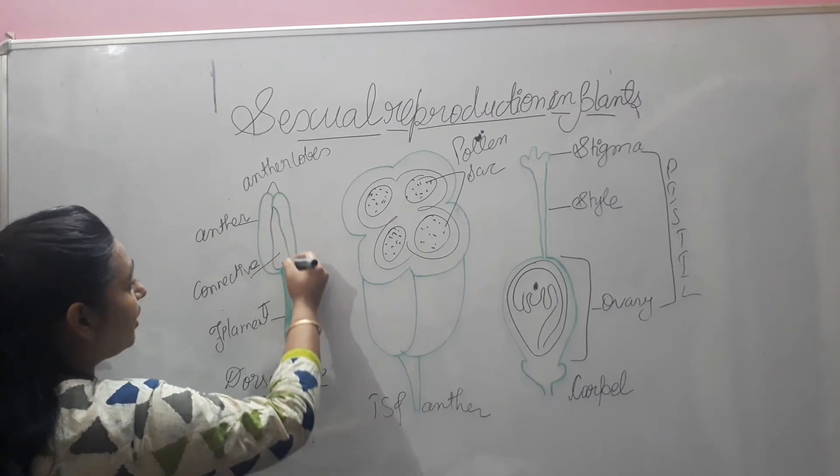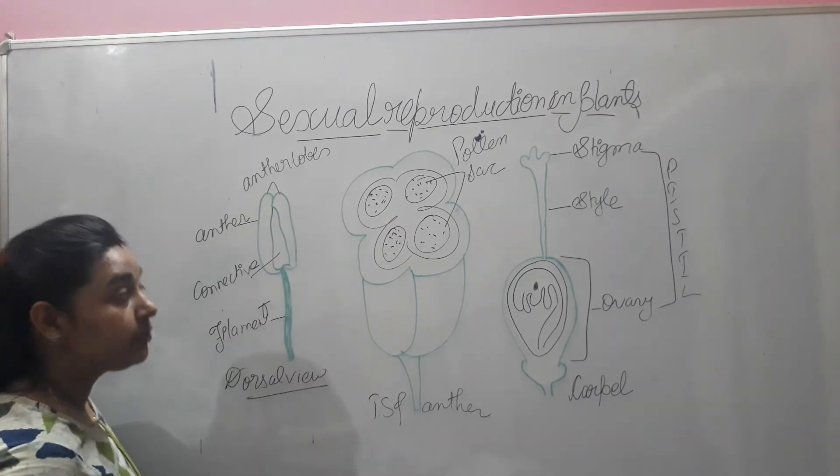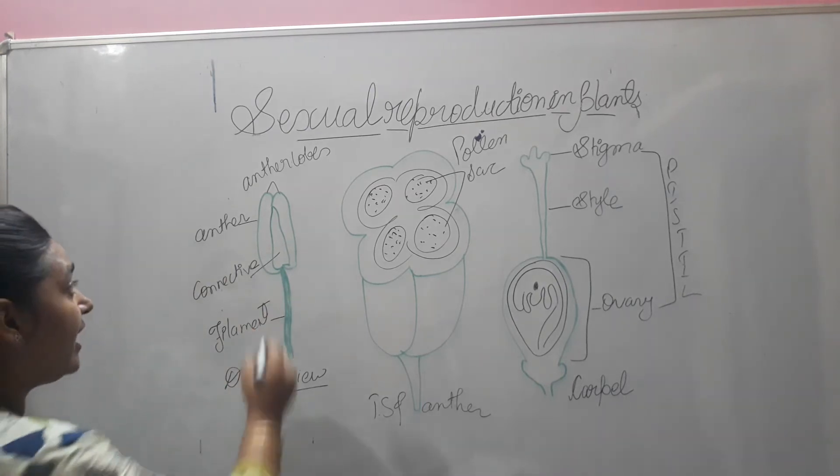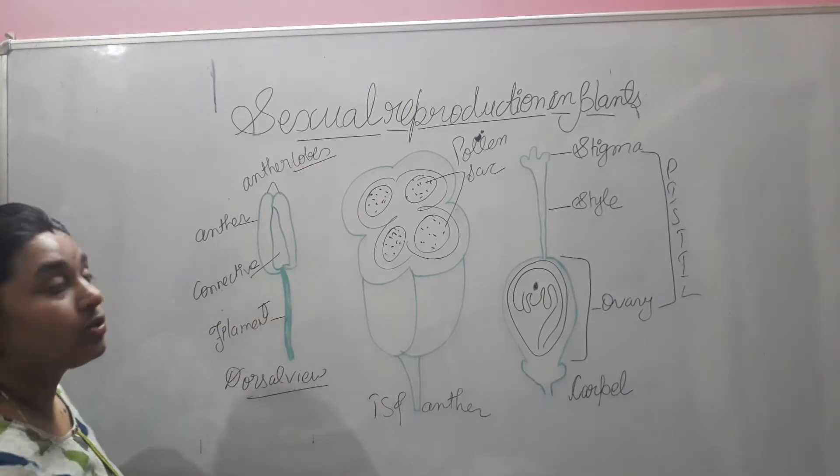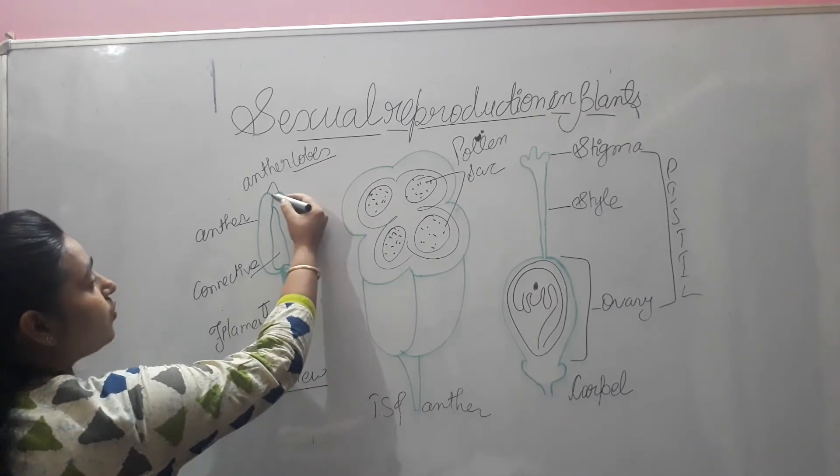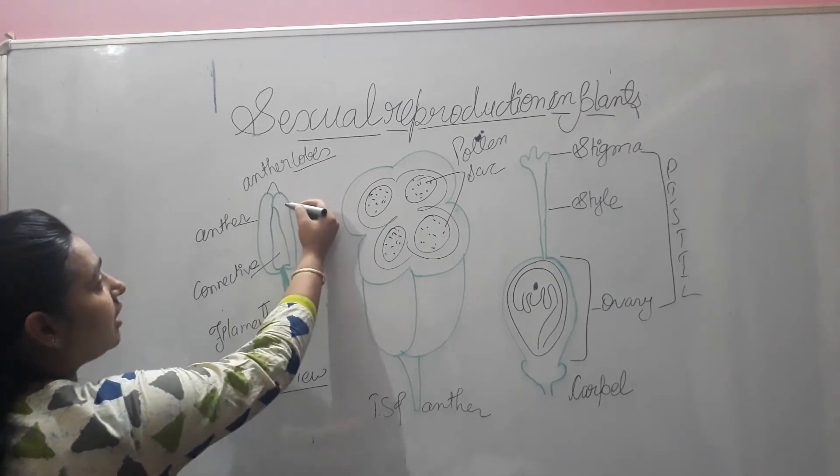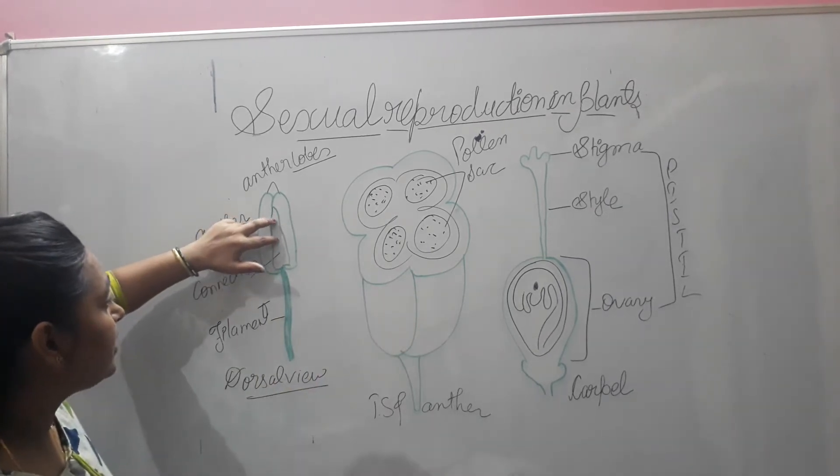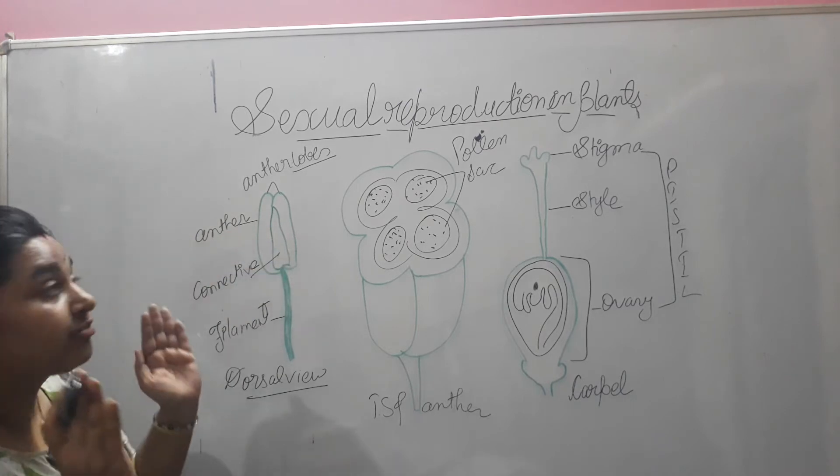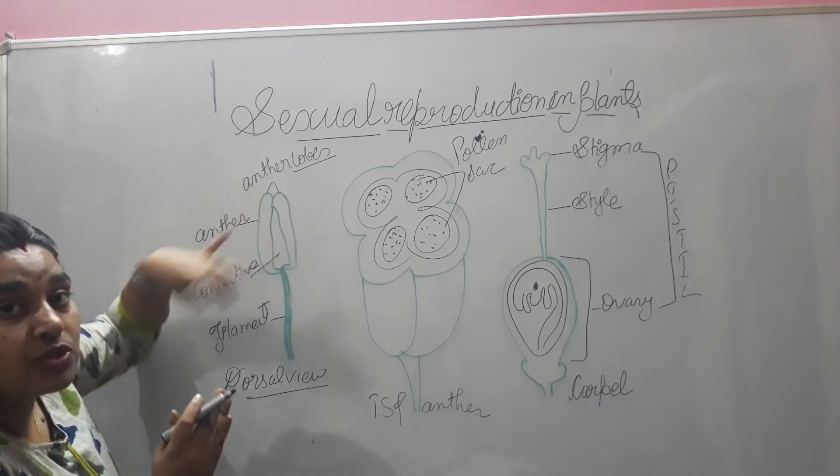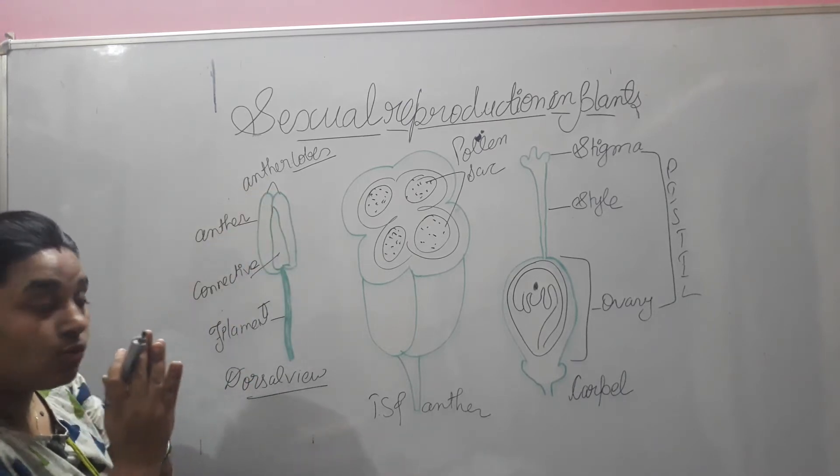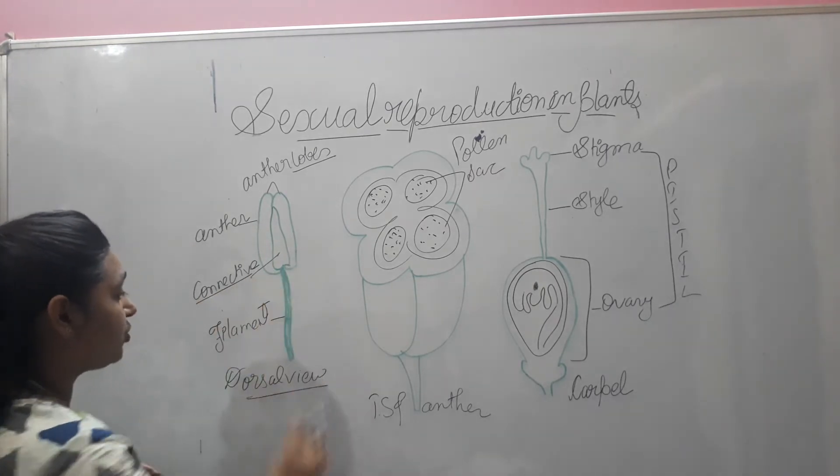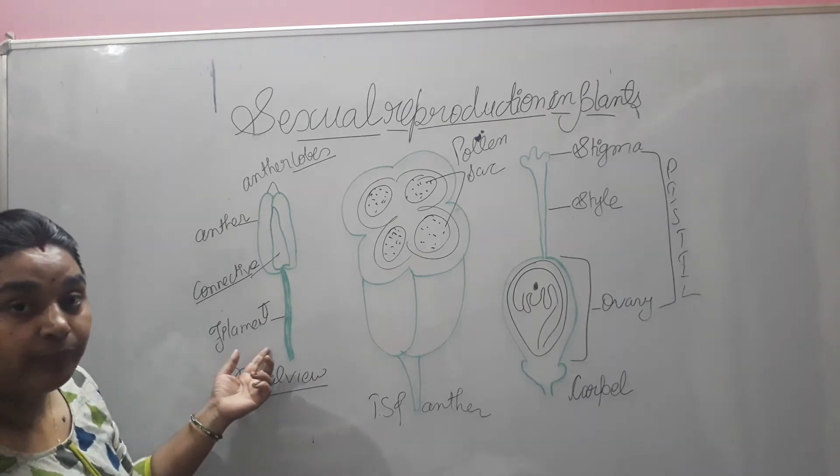When you see the anther under the microscope, you will see that it is distinguished into two different sections called lobes. Here it has been mentioned as anther lobes. One lobe is this and the other lobe is this one. In between you can see this area, this is the connective tissue of both of these lobes joining them together. This long stalk which you can see is the filament.